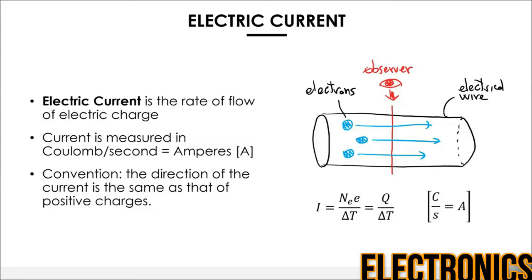Now that we've talked about electrons, we can talk about electric current. Electric current is simply the rate of flow of electric charge. Let's look at the example on the right. Let's say you have an electrical wire — a piece of copper, for example. We are looking at a section of the wire; it actually continues on both sides, so it's just a little section of it.